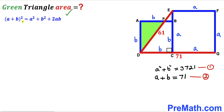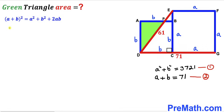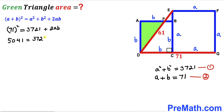Now let's recall the identity: (a + b)² = a² + b² + 2ab. Here a + b = 71 and a² + b² = 3,721. Substituting: 71² = 3,721 + 2ab, which gives 5,041 = 3,721 + 2ab. Subtracting 3,721 from both sides, we get 2ab = 1,320. I'll label this equation number three.